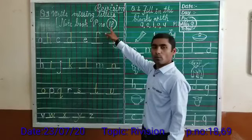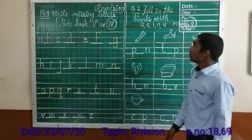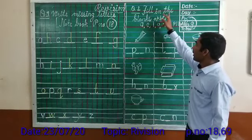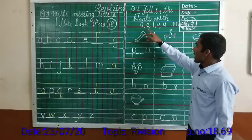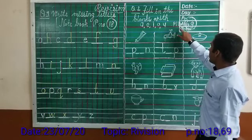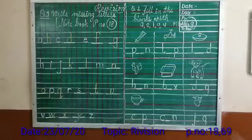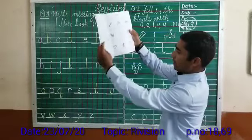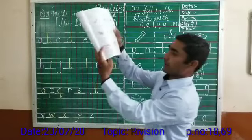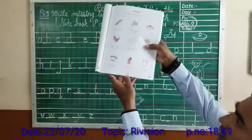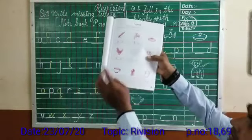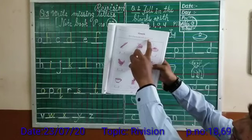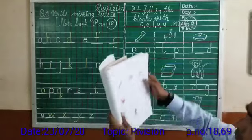X and Z. Let us move to the next question — Question 2: fill in the blanks with A, E, I, O, U. Page number 69. Here again is the orange book and page number 69. I revise again — page number 69 — four words, fill in the blanks with A, E, I, O, U. Let us redo on the board.